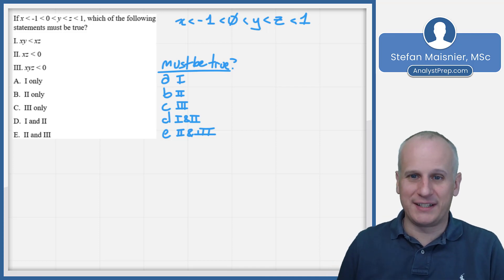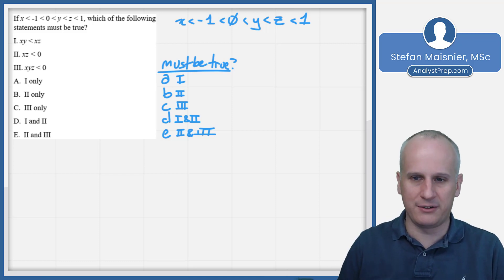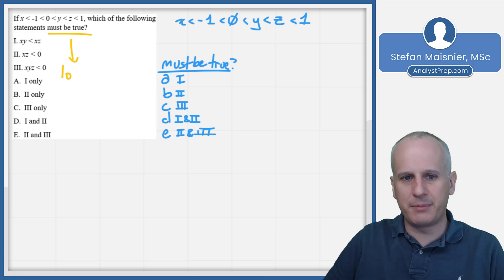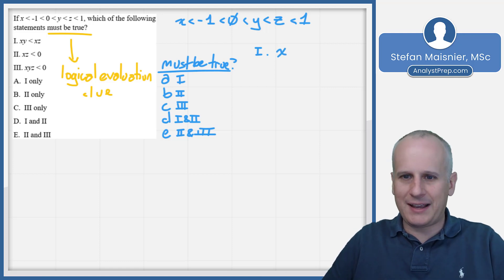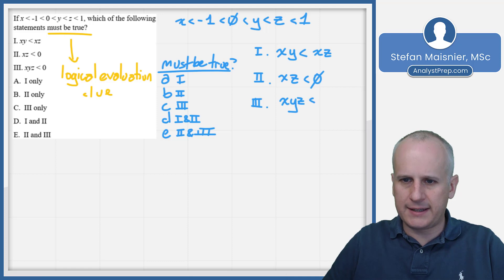Because we're being asked what must be true — not a specific individual value — this is a logical evaluation problem. We write out the Roman numerals: Roman numeral 1 says xy < xz; Roman numeral 2 says xz < 0; Roman numeral 3 says xyz < 0.